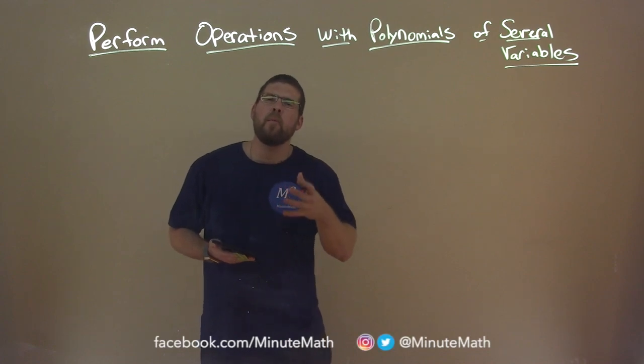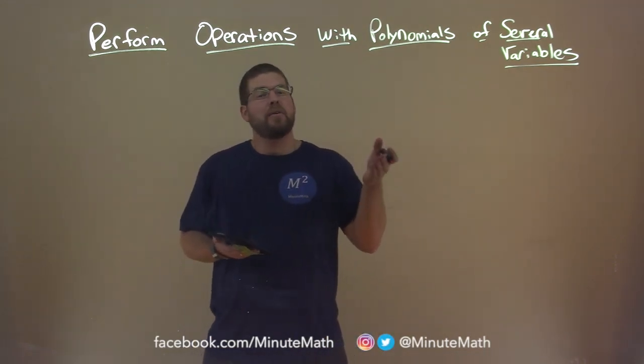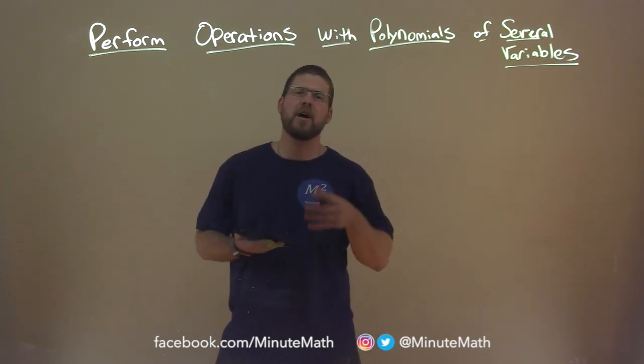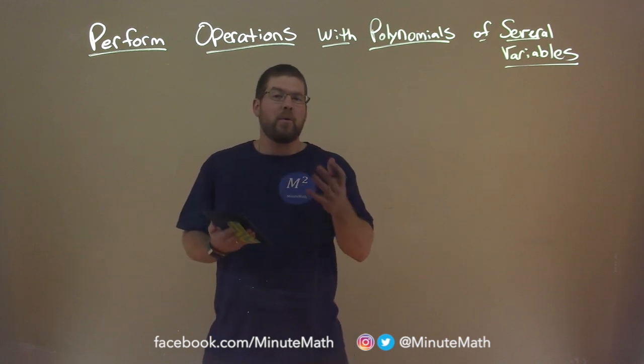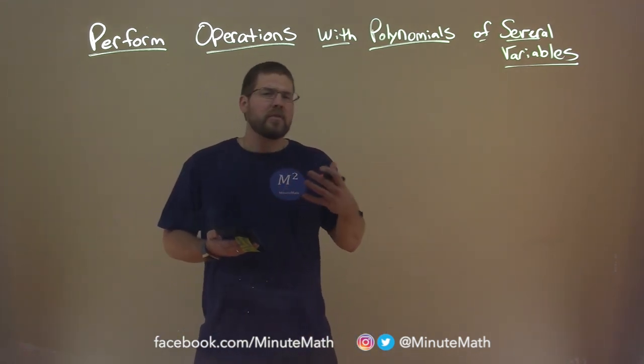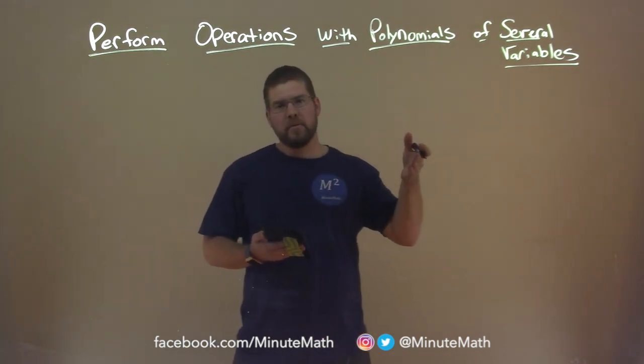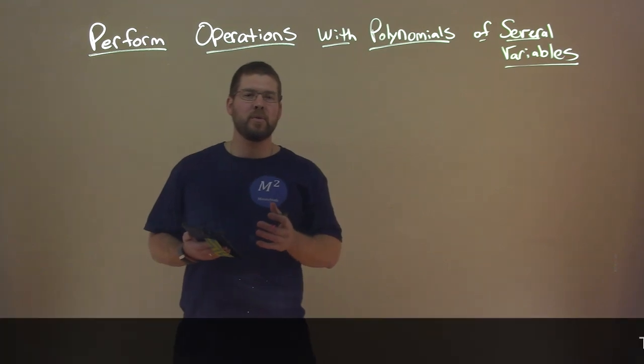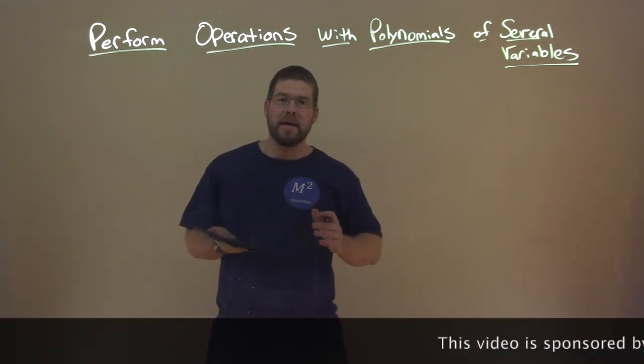One thing that we've dived into already is just operations with polynomials, but it's been a single variable, generally variable x, but it's only one variable in the whole expression that we're simplifying. The rules still apply that we've learned earlier when we have different variables or multiple variables within the expression, but we have to remember we can only combine our like terms.